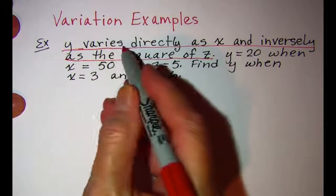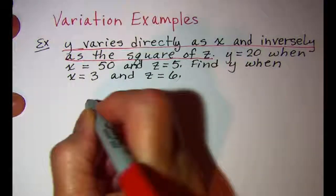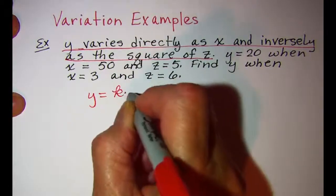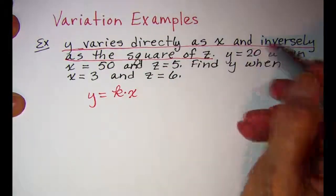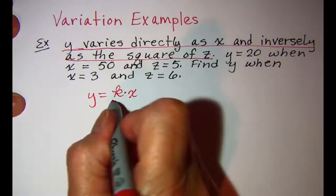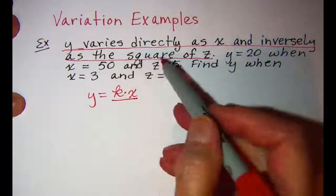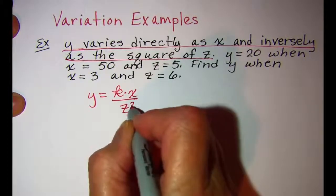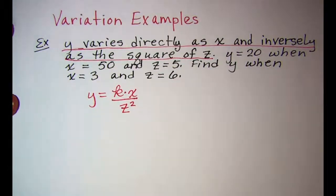y varies directly as x and inversely as the square of z. Remember that when you have inverse variation you divide by that quantity.